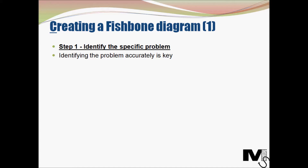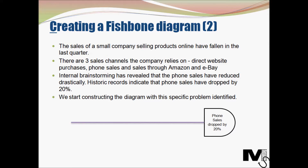Step one is to identify the specific problem. Obviously if you don't know the specific problem at hand you won't be able to solve it. So correctly identifying the problem is key to getting to its root. In our example, the sales of a small company selling products online have fallen in the last quarter — but this is a broad problem; they need to get it a lot more specific to start creating a fish bone diagram.